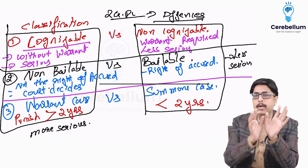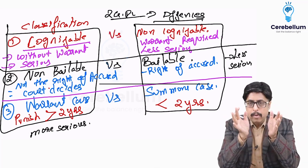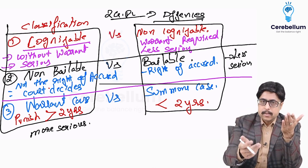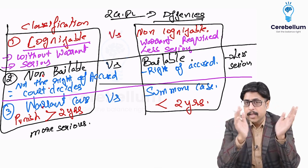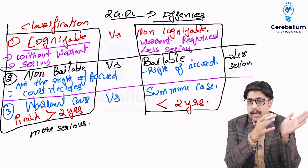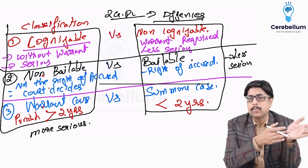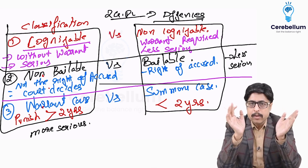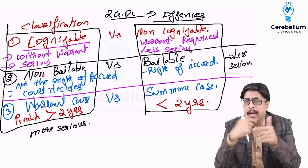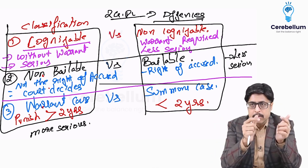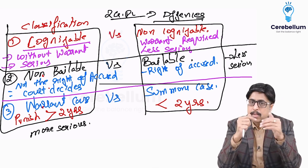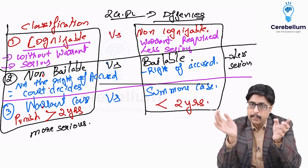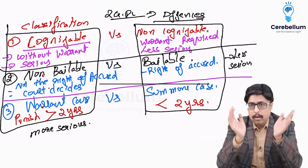An easy way to remember: non-bailable and cognizable go hand-in-hand as serious offenses. A summons can be issued to anybody, whereas a warrant is issued in serious matters. So a warrant case is a more serious case where the punishment is more than 2 years, and a summons case is where the punishment is less than 2 years. Non-bailable and cognizable are serious offenses; bailable and non-cognizable go hand-in-hand as less serious offenses.